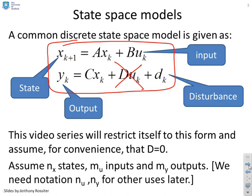If you happen to need it, you could introduce a notation that says something like we've got nx states, mu inputs, and ny outputs. You'll notice we haven't used nu and ny for the number of inputs and outputs because that notation is very commonly used in the predictive control literature to mean something else, so we'd best reserve it for the common usage.